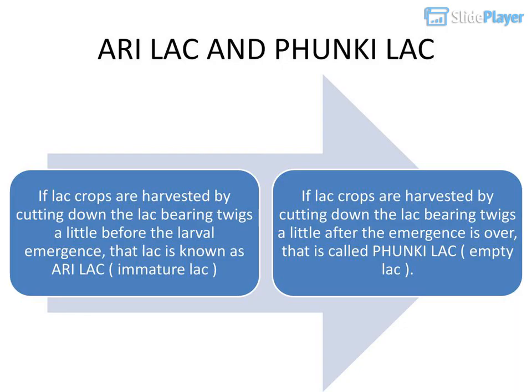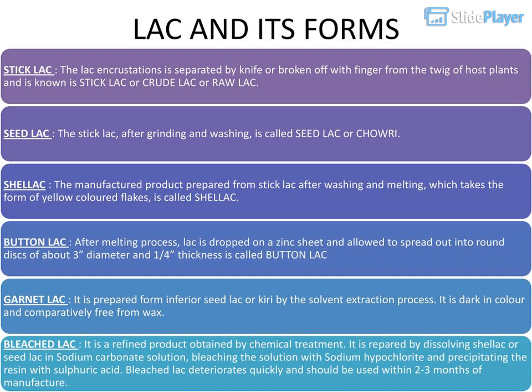If lac crops are harvested by cutting down the lac-bearing twigs a little before larval emergence, that lac is known as Ari lac or immature lac. If lac crops are harvested by cutting down the lac-bearing twigs a little after emergence is over, that is called Funky lac or empty lac.